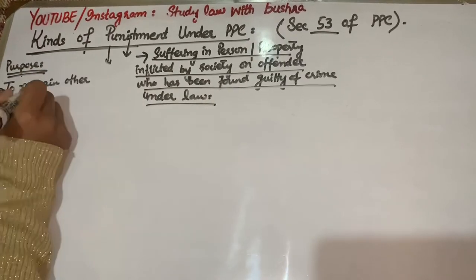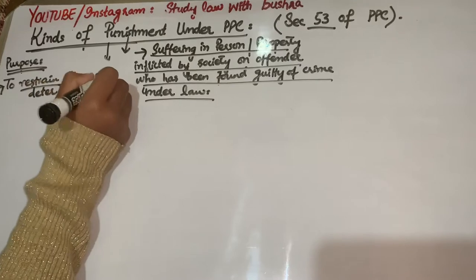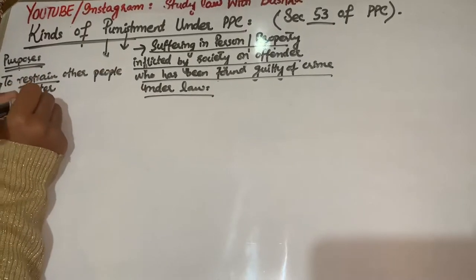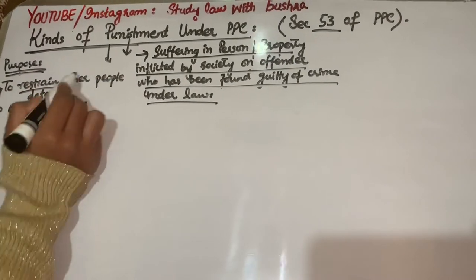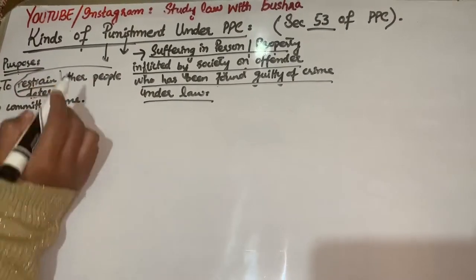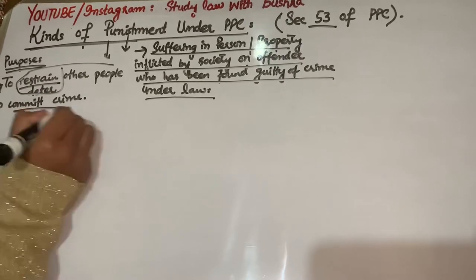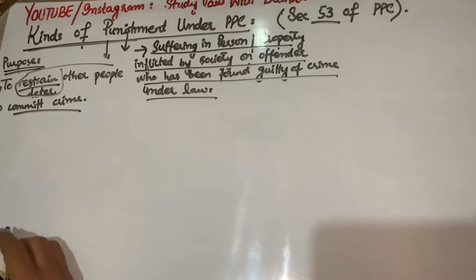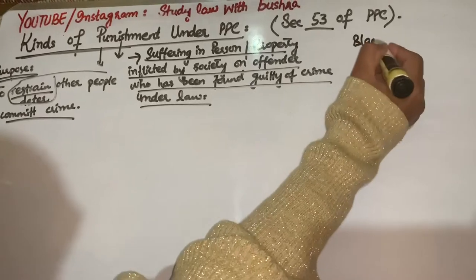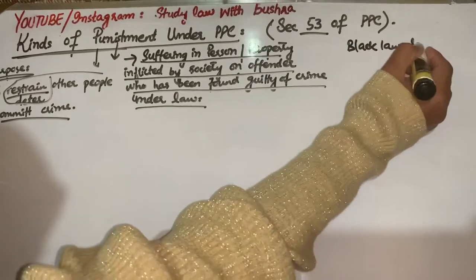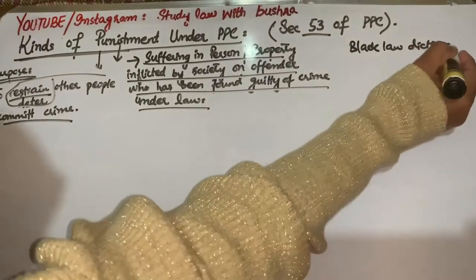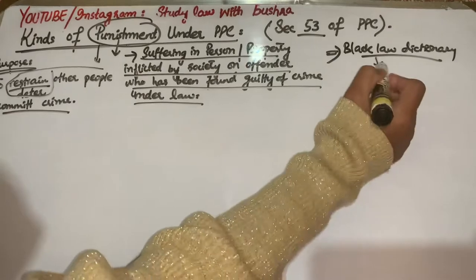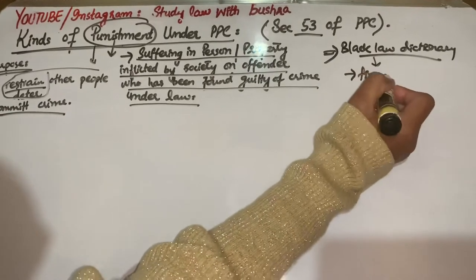The main purpose or main object of awarding punishment is to create such an atmosphere which restrains the people, or which deters the people from doing such offences, from committing such crimes. You can also see the definition of punishment in Black's Law Dictionary.